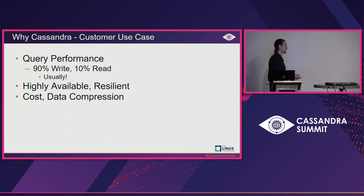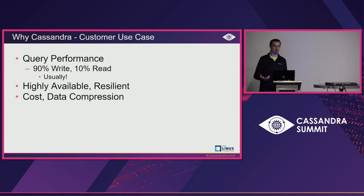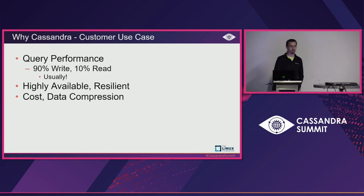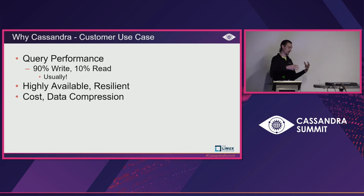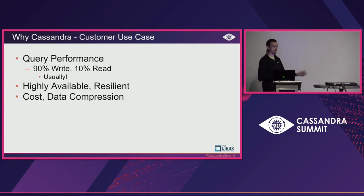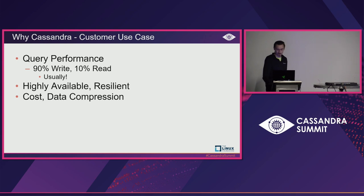What's the customer use case for why you would want to use Cassandra as the backing database to a historian? It's kind of common knowledge in the Cassandra community — its strength in time series data. For most of our customers it's a 90% write, 10% read kind of use case. From a regulatory perspective, electric utilities in the US have to have a kind of a black box recorder of what's happened so that if there is an incident they're able to go back, analyze, and learn from that failure in the grid and change procedure to increase resiliency.